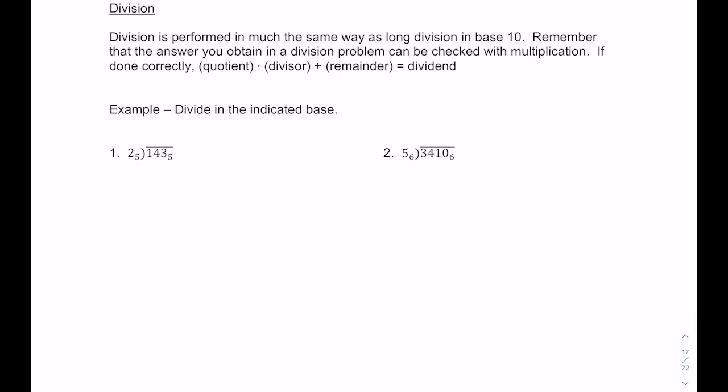Division is performed just like long division in base 10. You can check your answer by taking the quotient, multiplying it by the divisor, adding the remainder, and confirming it equals the dividend. One helpful tool is to construct a multiplication table for the base you're working in. For base 5, that means using only digits 0 through 4, written both vertically and horizontally.